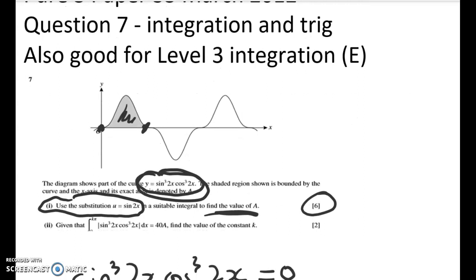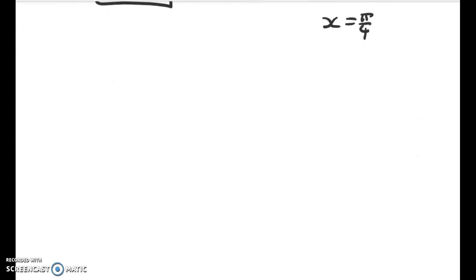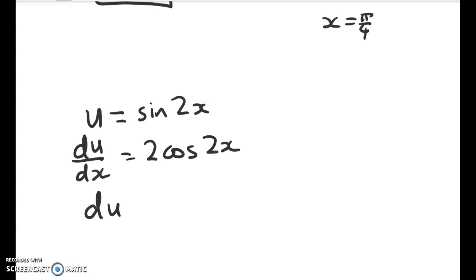We've got the limits of integration. Now we're ready to start to find this integral. And we're going to use the substitution of u equals sine 2x. So if we let u equal sine 2x, du by dx is equal to 2 cos 2x.